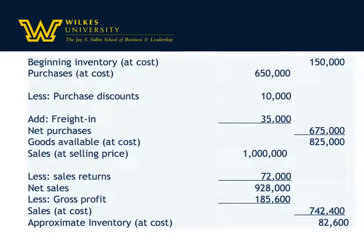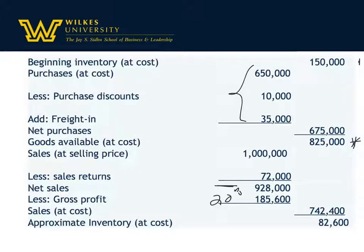Putting that back into our formula, the second example is the same problem, except when we get to net sales, we multiply by 20%. We still have beginning inventory and net purchases, giving us goods available of $825,000. Goods available minus cost of goods sold is ending inventory. From sales minus sales returns we get net sales, then subtract the gross profit markup of $185,600 to get cost of goods sold of $742,400, leaving ending inventory of $82,600.